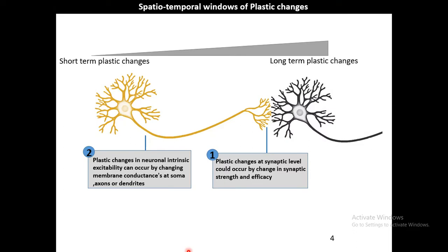You might think that plastic changes at a neuronal level could only occur at synapses, but this notion is not true, because other levels like membrane conductances and the intrinsic excitable properties of the neuron could also be plastic. One such plastic change occurs at synapses — at the synaptic level — by changing and altering the synaptic strength.